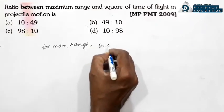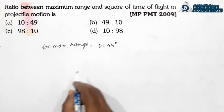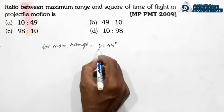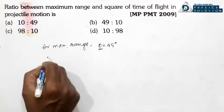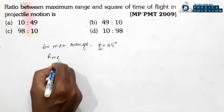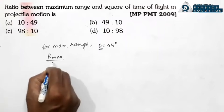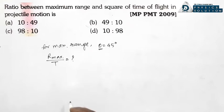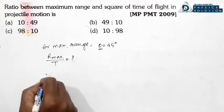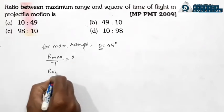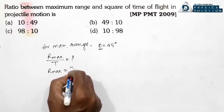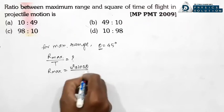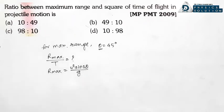Theta is equal to 45 degrees — tab maximum range hoti hai. Ab maximum range ka formula kya hota hai? That is u² sin2θ divided by g. Yeh toh general formula hai, range of projectile.